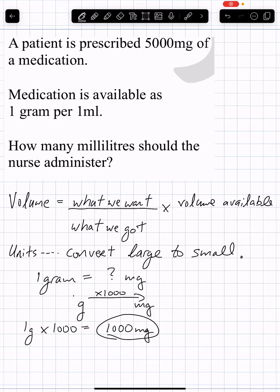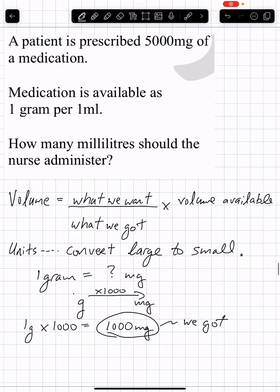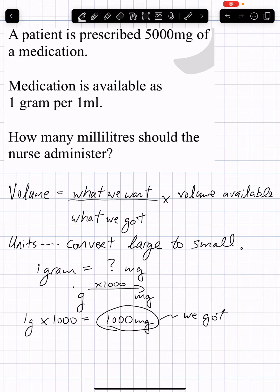This 1,000 mg is now what we got — that's what's on the shelf: 1,000 milligrams in 1 mL of fluid. So our volume equation is: V equals 5,000...